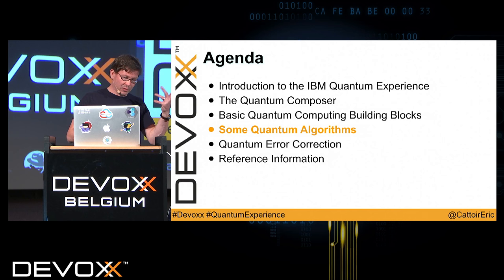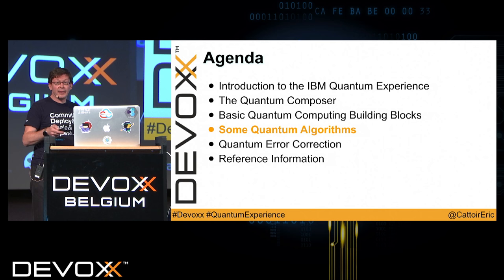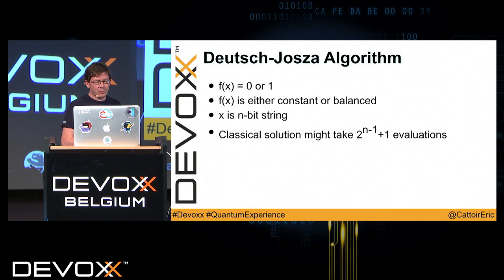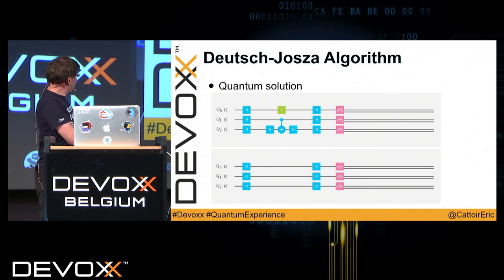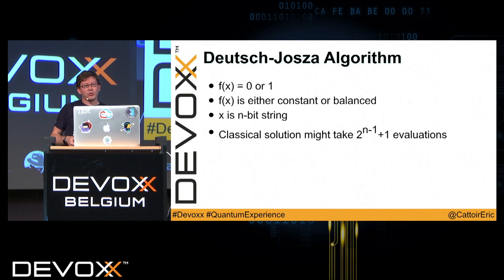We also need non-Clifford gates that allow us to reach other states and do more interesting experiments — rotations in the Bloch sphere that go beyond traditional operations. Now let's look at some quantum algorithms and how we can actually do something with this. The important thing to understand is that we want to make use of superposition because it allows us to perform many operations simultaneously.